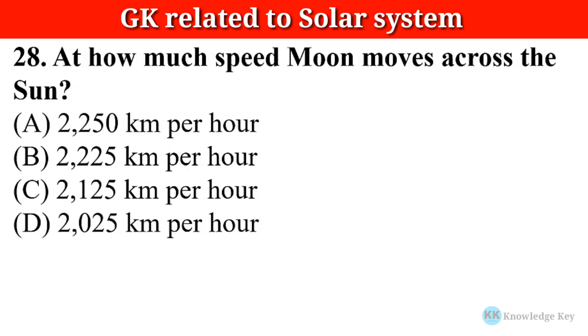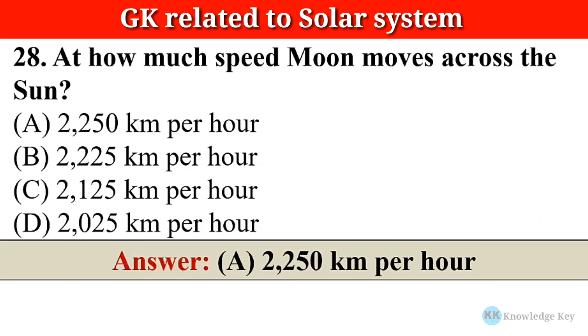Question number twenty-eight: At what speed does the Moon move across the Sun? The correct answer is option A — 2,250 kilometers per hour.